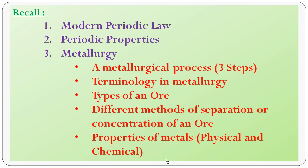Good morning students, welcome back to the chemistry lesson on periodic classification of elements. In the previous topic, we covered modern periodic law, periodic properties, and metallurgy. In metallurgy, there are three steps: conversion of ore, production of the metal, and refining of the metal. Types of ores include carbonate, halide, or sulfate, and methods of separation include hydraulic, magnetic separation, froth flotation, and chemical (leaching) methods.